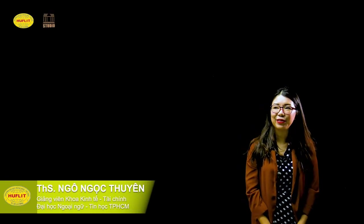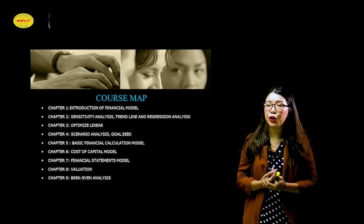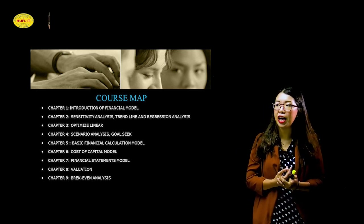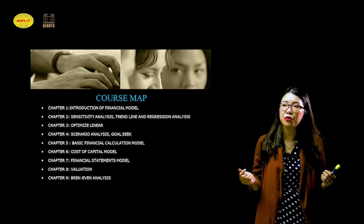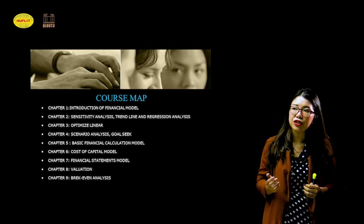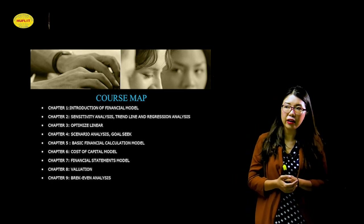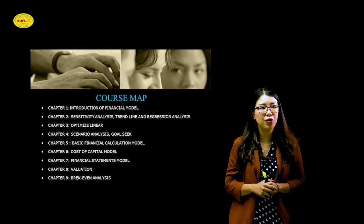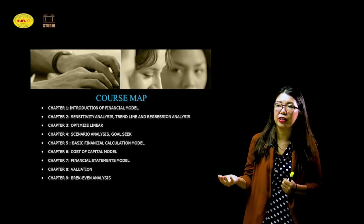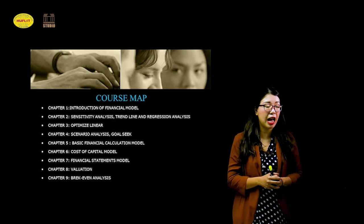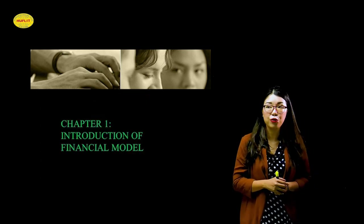Good morning everybody. Today I would like to introduce you to the overall course map of financial models. As you can see on the slide, we're going to have nine chapters. Chapter one is an introduction to financial models, chapter two is sensitivity analysis, trendline, and regression analysis, chapter three is optimization and linear programming, chapter four is scenario analysis and GONSEK, chapter five is basic financial calculations, chapter six is cost of capital model, chapter seven is financial statement model, chapter eight is valuations, and the final chapter is break-even analysis. Today is the first day, so I'm going straight to chapter one: introduction to financial models.